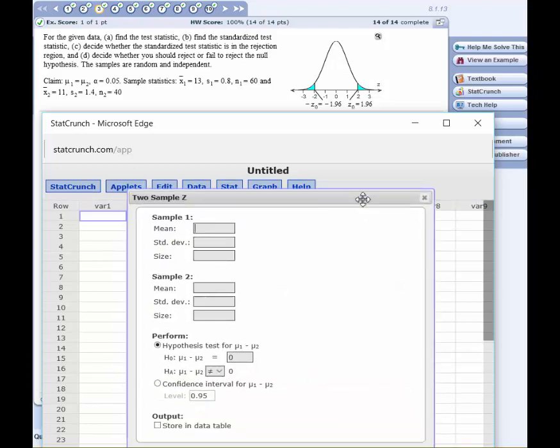Bring this up a bit. The mean of sample 1 is 13, standard deviation is 0.8, N1 equals 60. Mean of sample 2 is 11, standard deviation 1.4, and N2 equals 40.